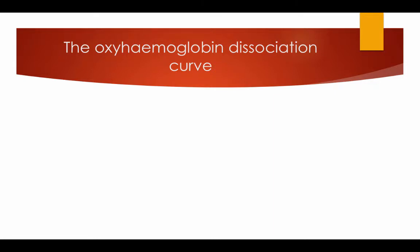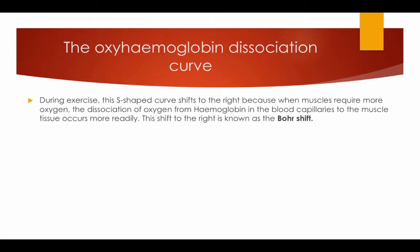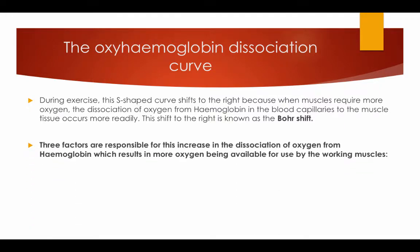During exercise the S-shaped curve shifts to the right because when the muscles require more oxygen, the dissociation of oxygen from the haemoglobin in the blood capillaries to the muscle tissues occurs more readily. The shift to the right is known as the Bohr shift. Three factors are responsible for the increase in the dissociation of oxygen from the haemoglobin, resulting in more oxygen being available for use by the working muscles.